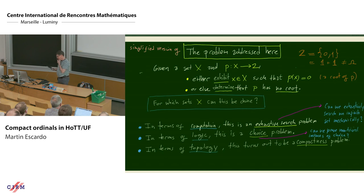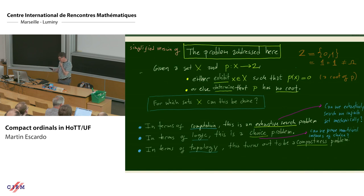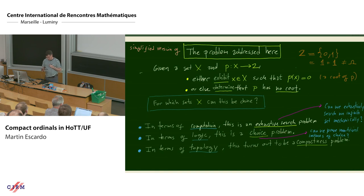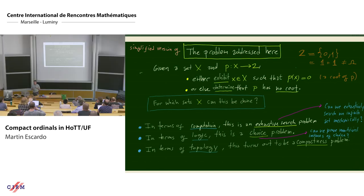In terms of logic, this is a kind of choice axiom — in fact, you will see it is a very strong choice axiom if we assume all types satisfy this property. In terms of topology, it turns out to be a compactness problem. In order to explain that, like many other talks here, I'm obligatorily going to show you a topos.